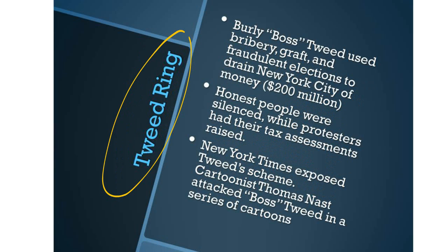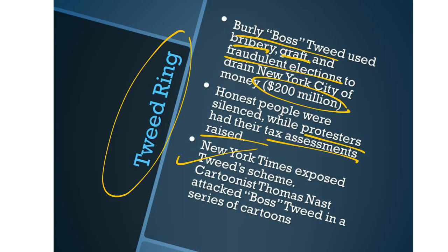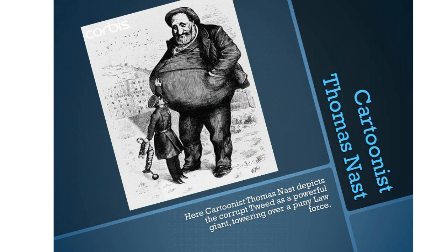The Tweed Ring was another example of corruption during the Grant administration. Burly Boss Tweed used bribery, graft, and fraudulent elections to drain New York City of almost $200 million. Honest people were silenced while protesters had their tax assessments raised as punishment. The New York Times exposed the Tweed scheme, and cartoonist Thomas Nast attacked Boss Tweed in a series of cartoons depicting him as a powerful giant towering over a very puny law force.